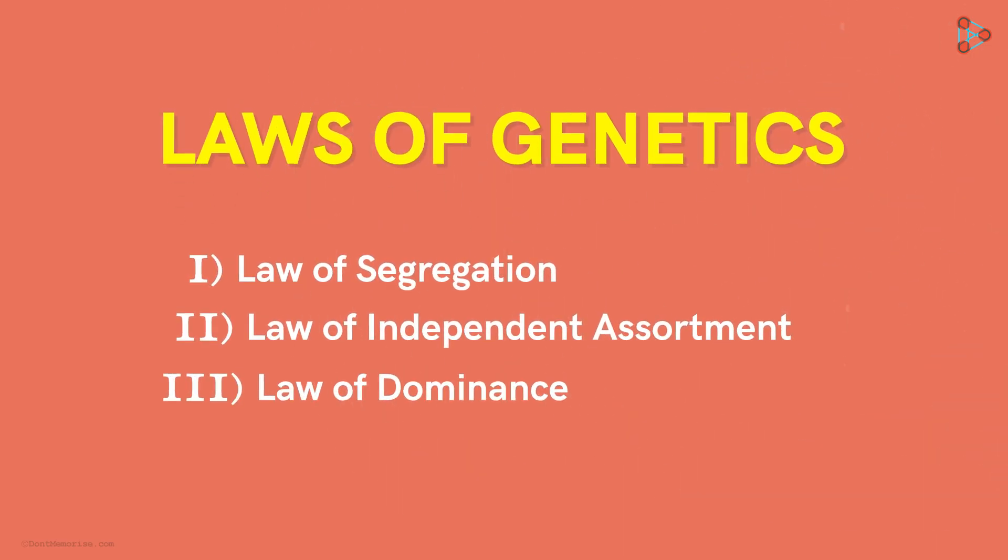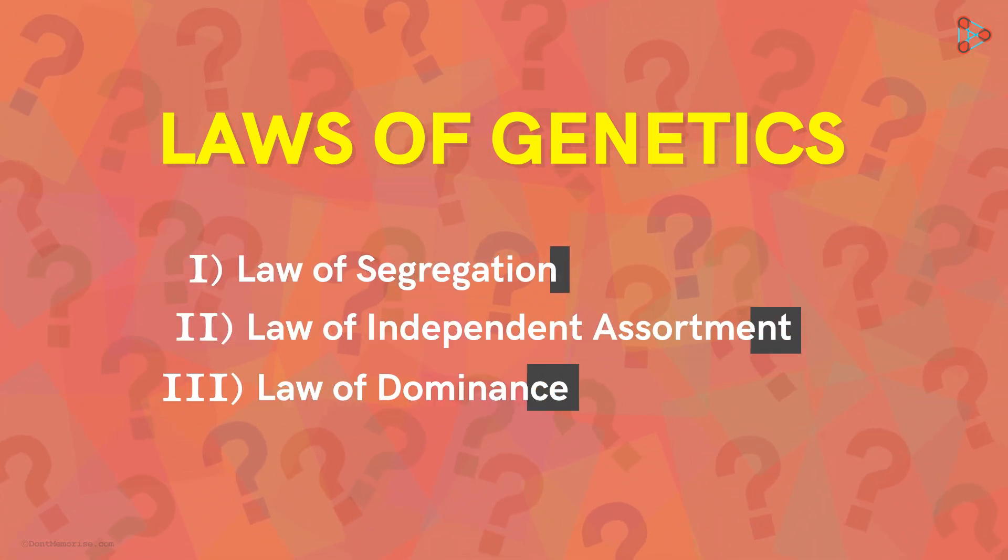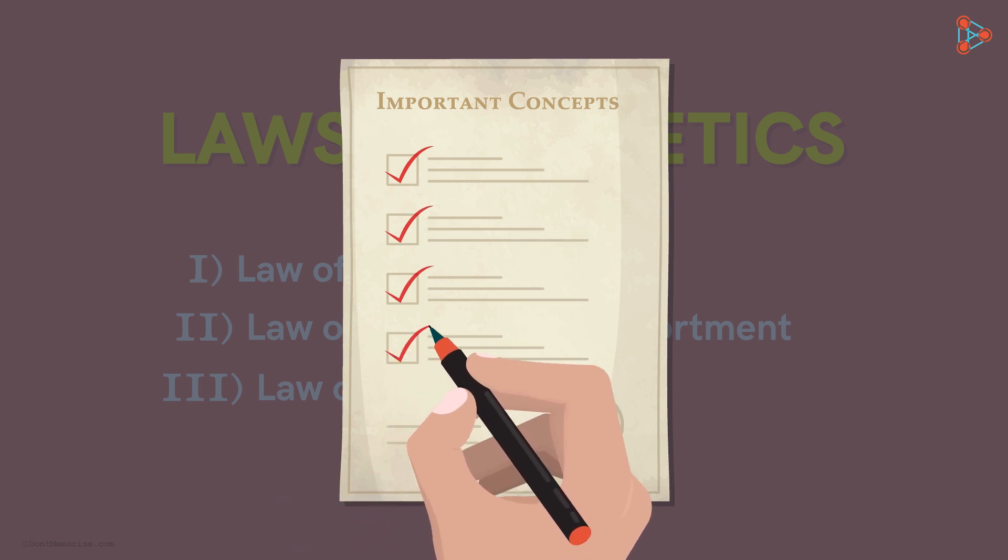The Three Laws in Genetics form the crux of this topic. These laws not only answered a few questions, but were even ahead of their time. They were instrumental in proving a few important concepts which were discovered in the following years.